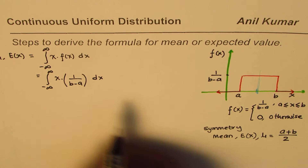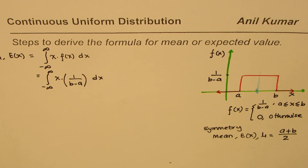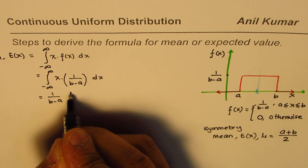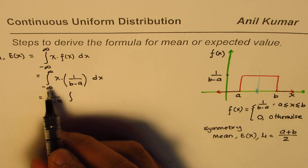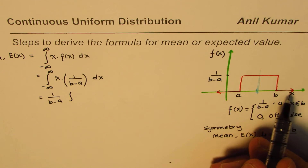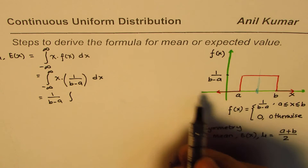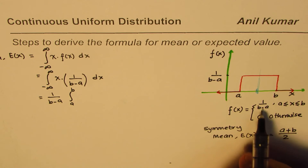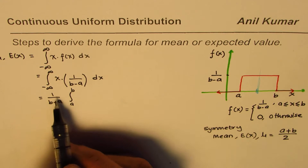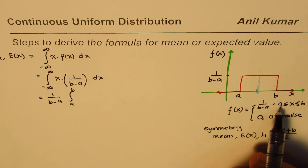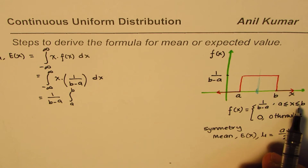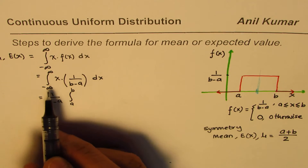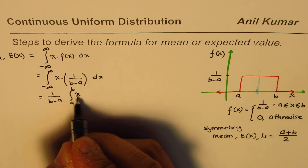Since b minus a is a constant, we can write this as 1 over b minus a times the integral. Since f of x is 0 outside the interval, the integral reduces to from a to b. So we have 1 over b minus a times the integral from a to b of x dx.